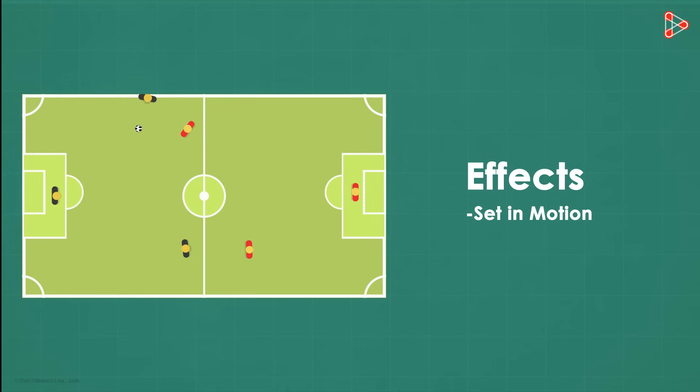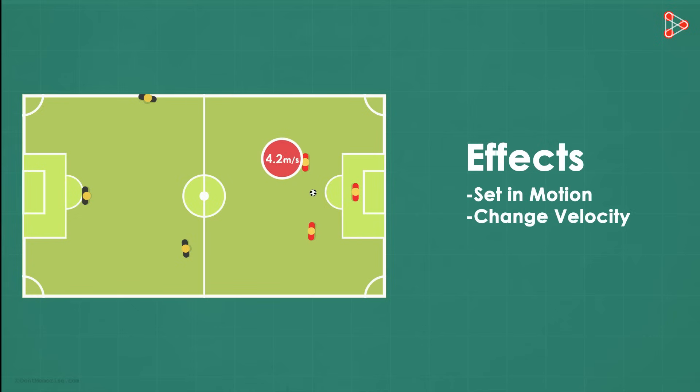Assume an object is moving at a uniform velocity of 2 meters per second. If it is pushed harder, its velocity will increase. So force can also change the velocity of an object.